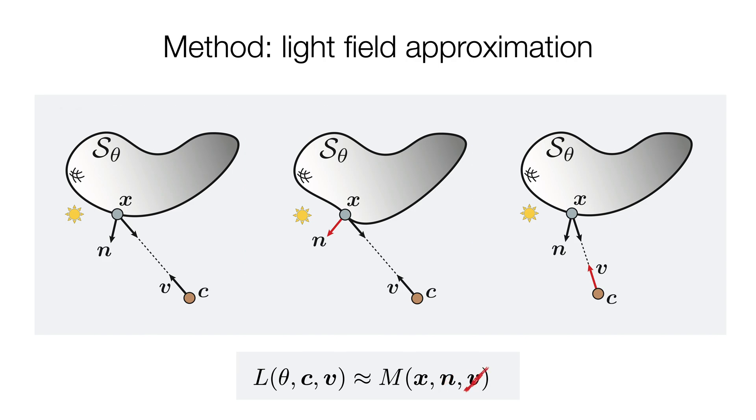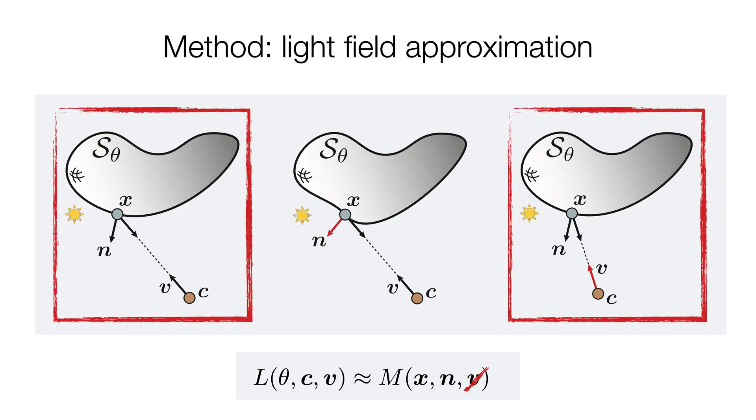A renderer without viewing direction will produce the same light estimation in those two cases, where in real life the scene appearance is likely to be view-dependent.